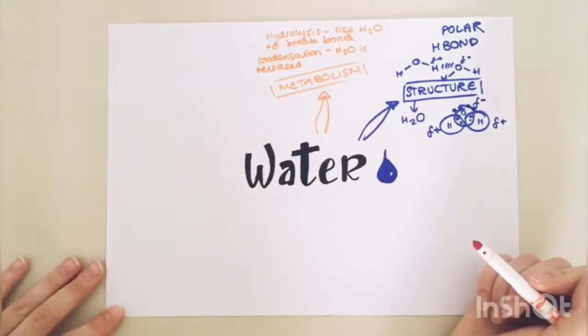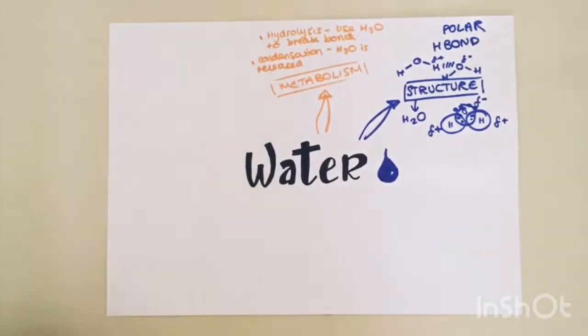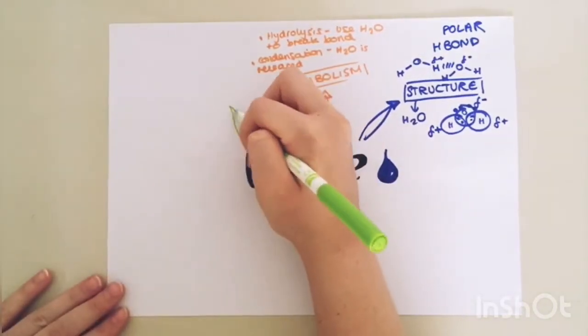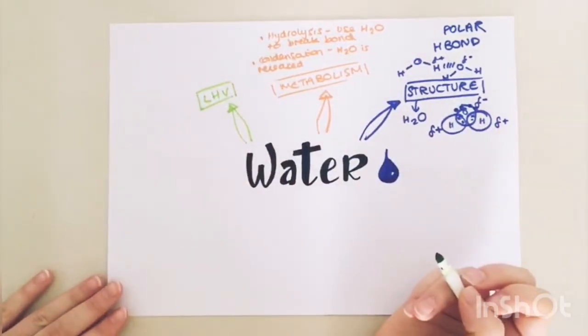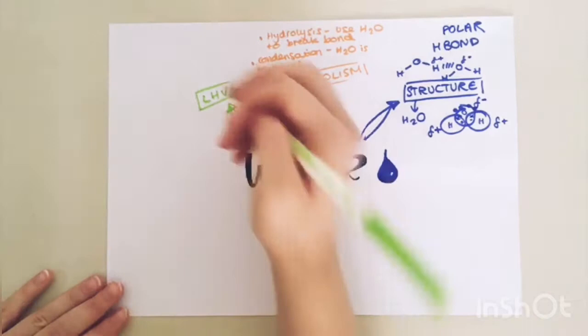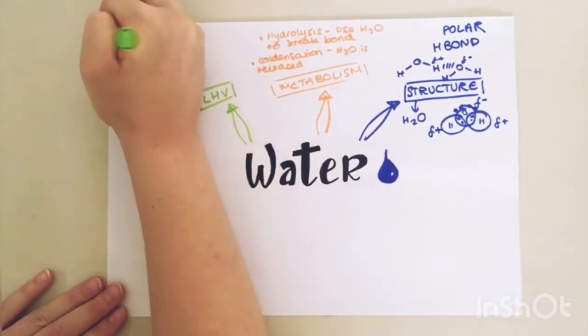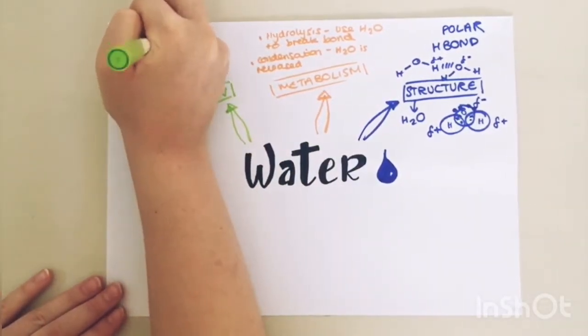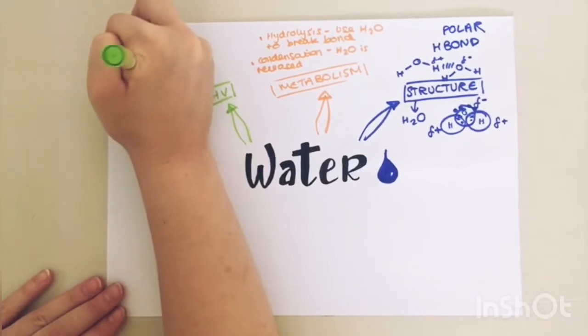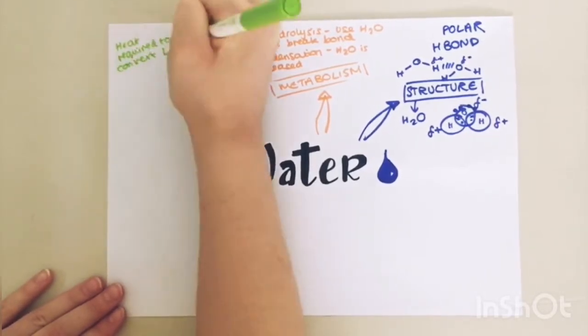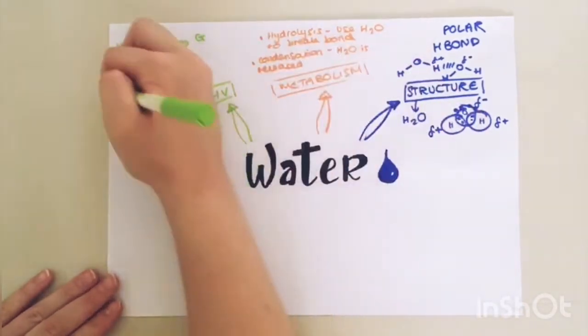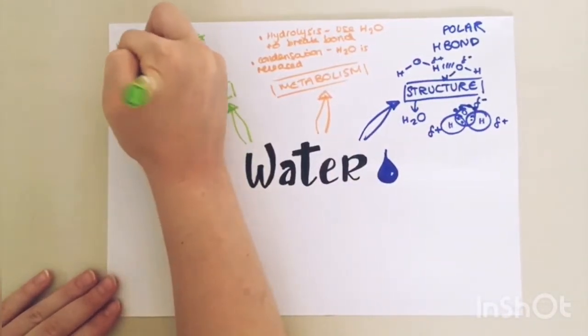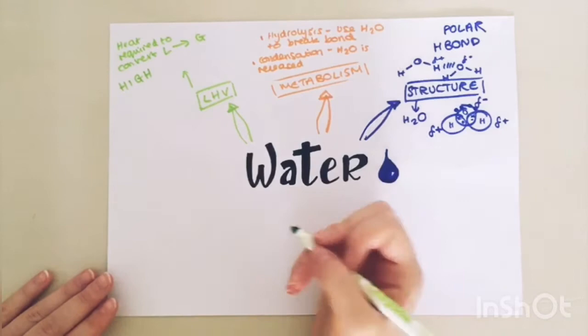The first really important property of water is its latent heat of vaporization. So latent heat of vaporization is basically the heat required to convert a liquid into a gas.